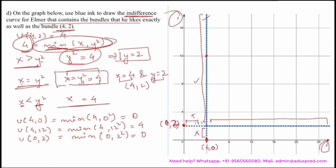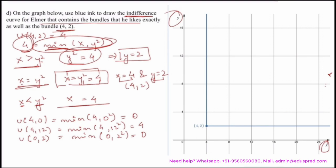The final graph is L-shaped. Despite the function containing y squared, the minimum function overpowers the interior functional form, so we still get straight lines rather than a parabola. Keep in mind you are drawing an L-shaped graph, not a parabola. This is the indifference curve for Elmer that contains the bundle he likes exactly as well as the bundle (4, 2). That was all for this video. Thank you.